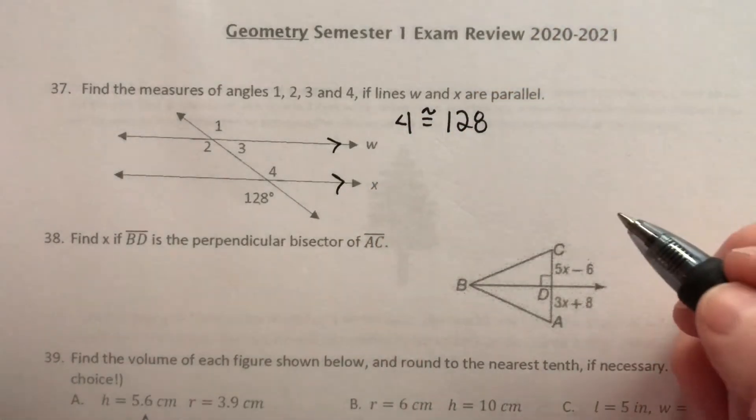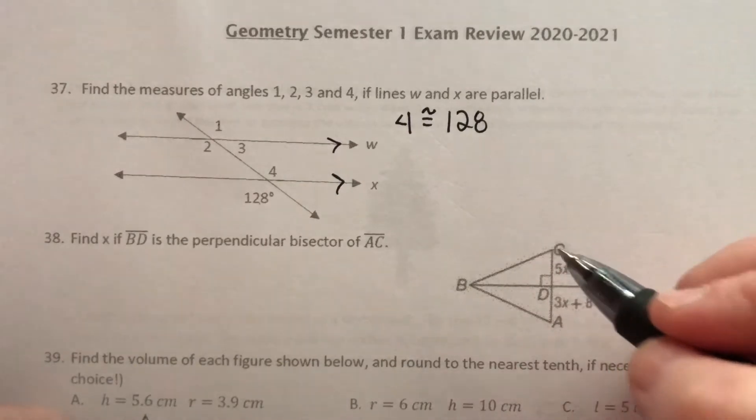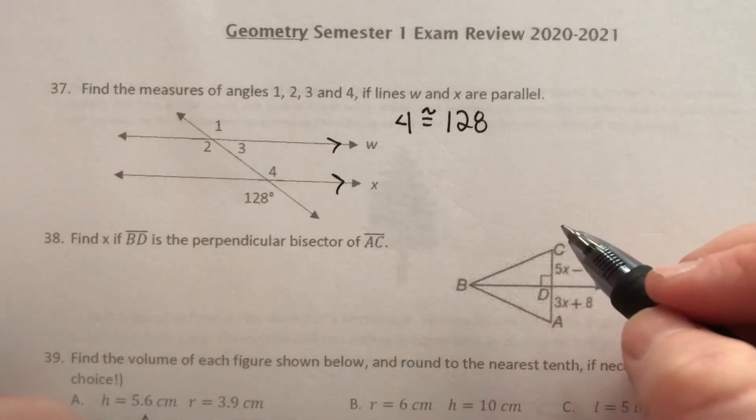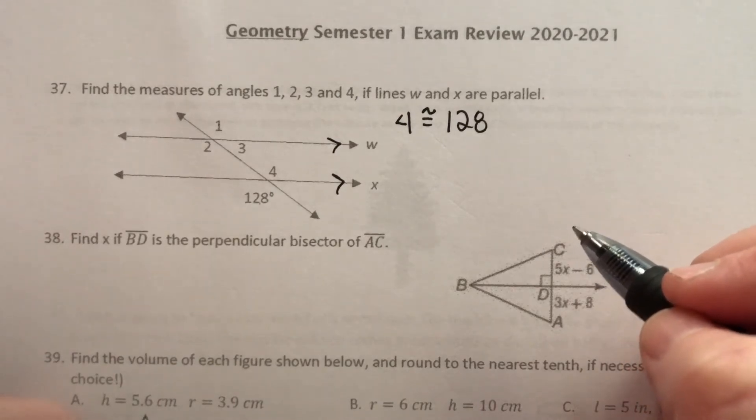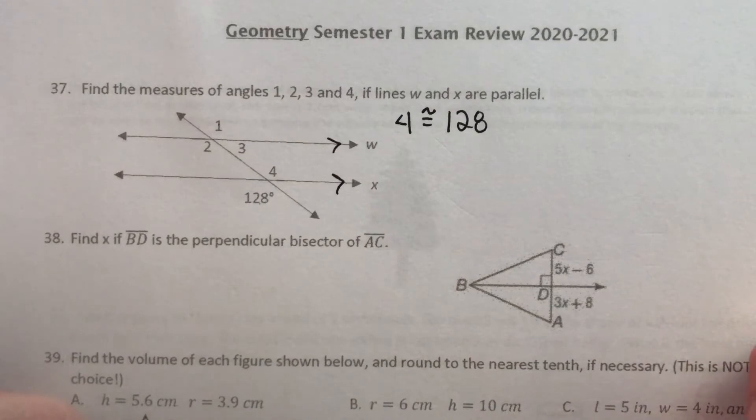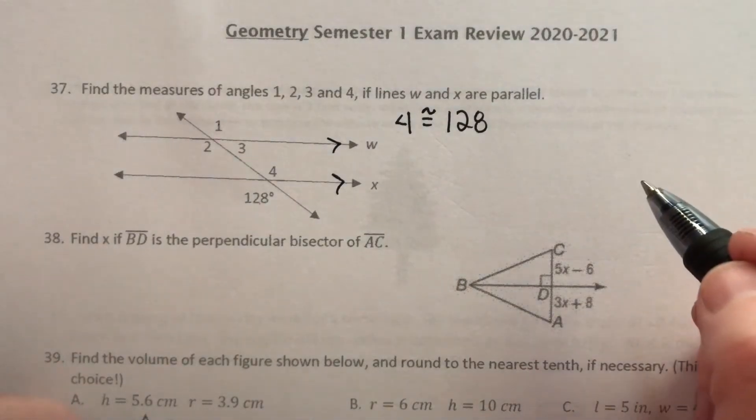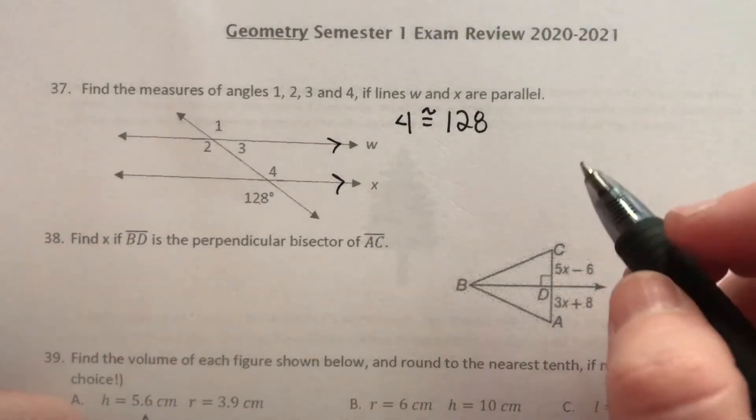So I know angle 1 is congruent to 128. And remember when you have a relationship between parallel lines and a transversal, it seems like all of the angles created are either supplementary or congruent, either one. So once you find one angle measure, you can find the other angle measure.